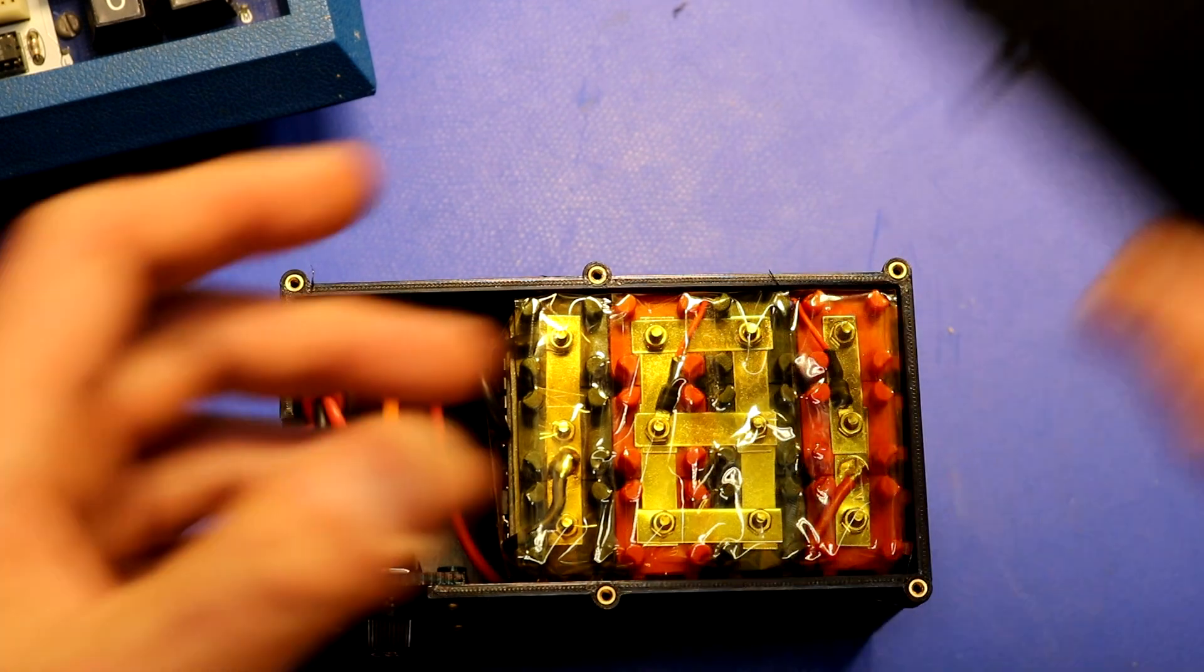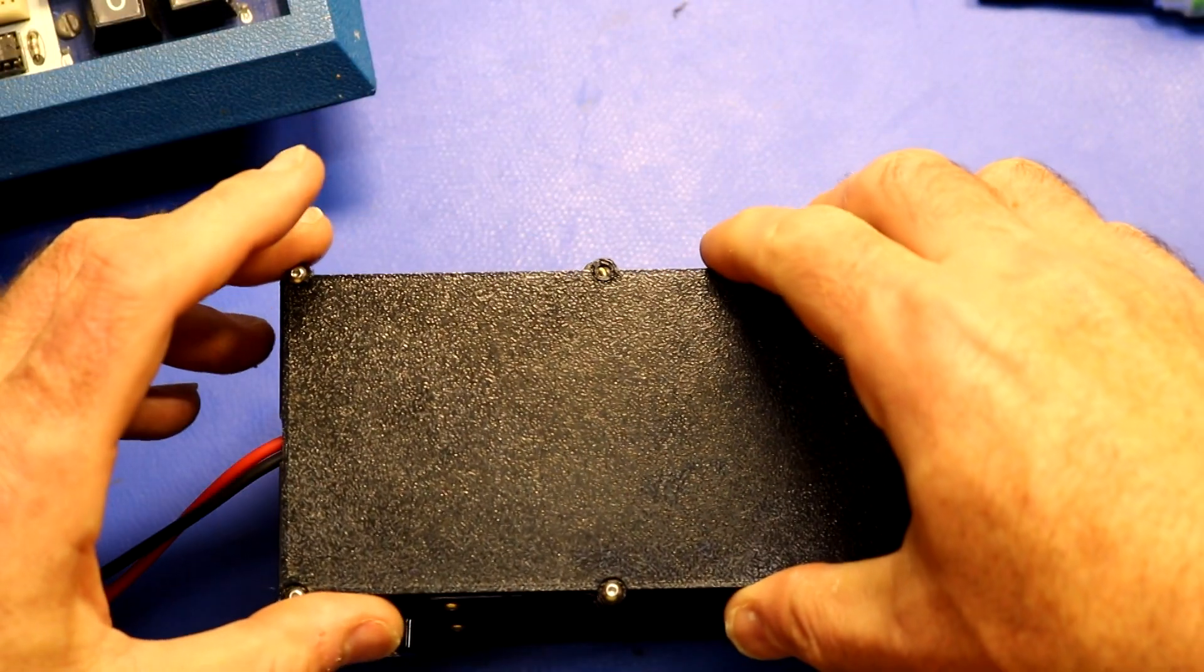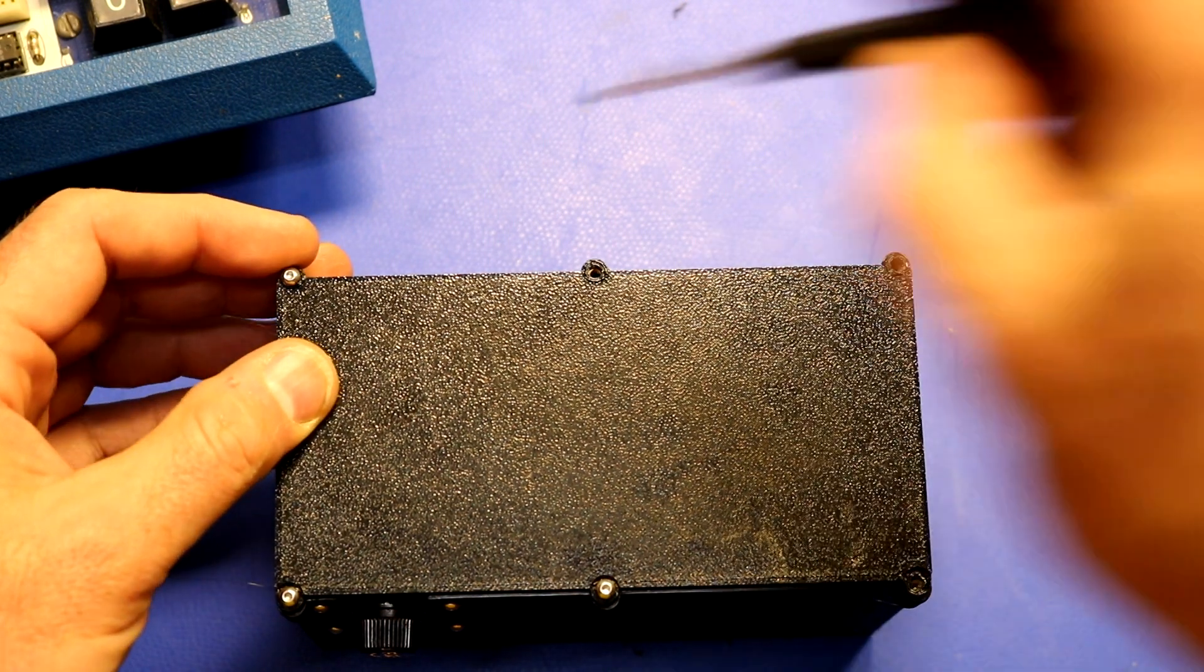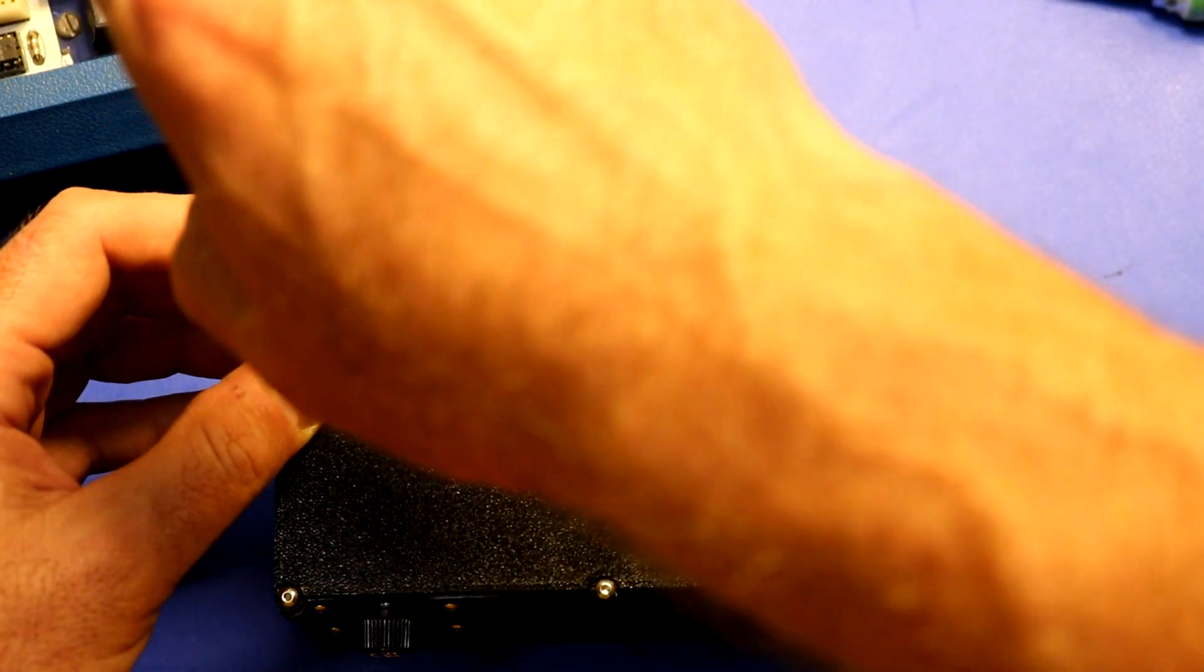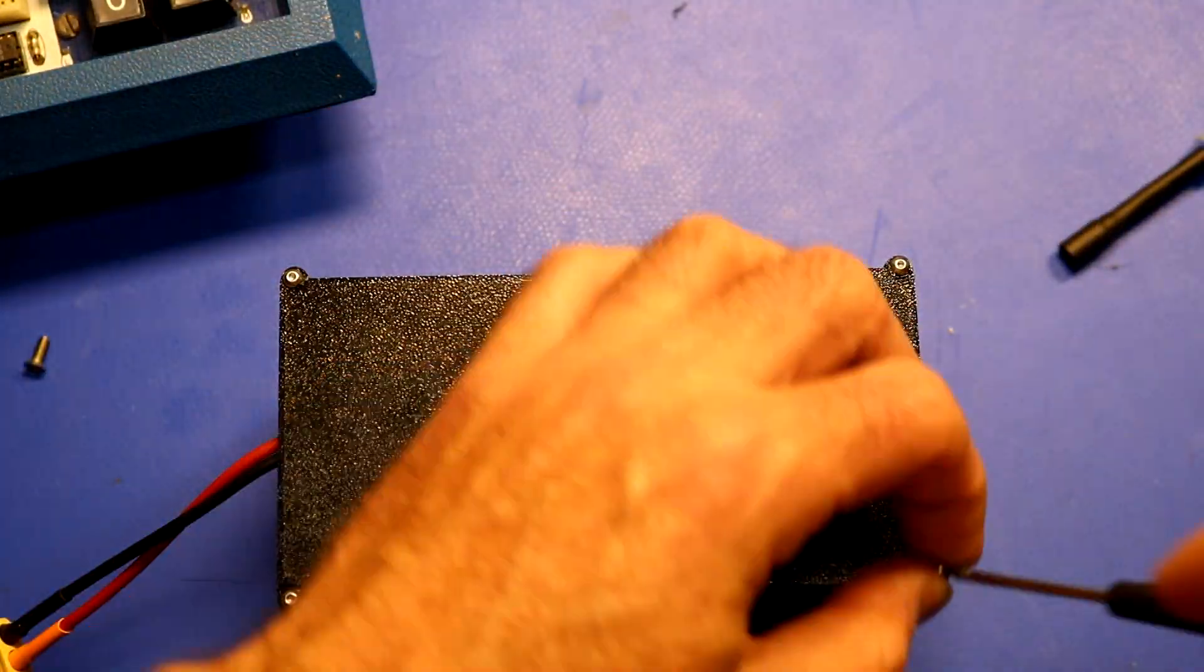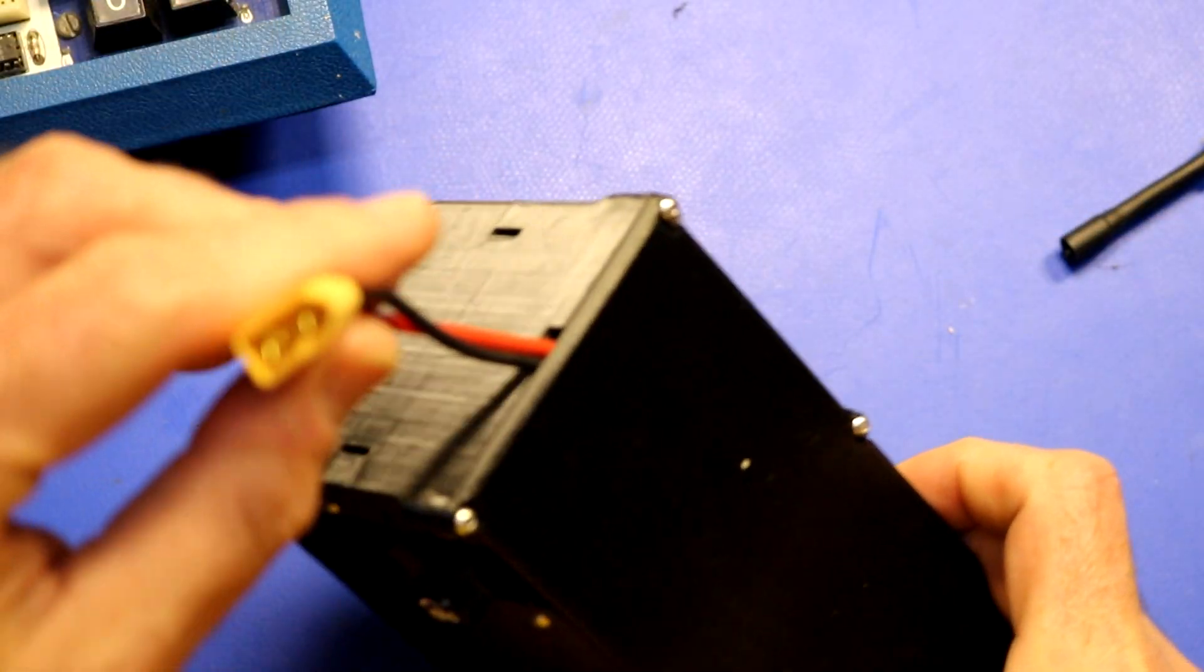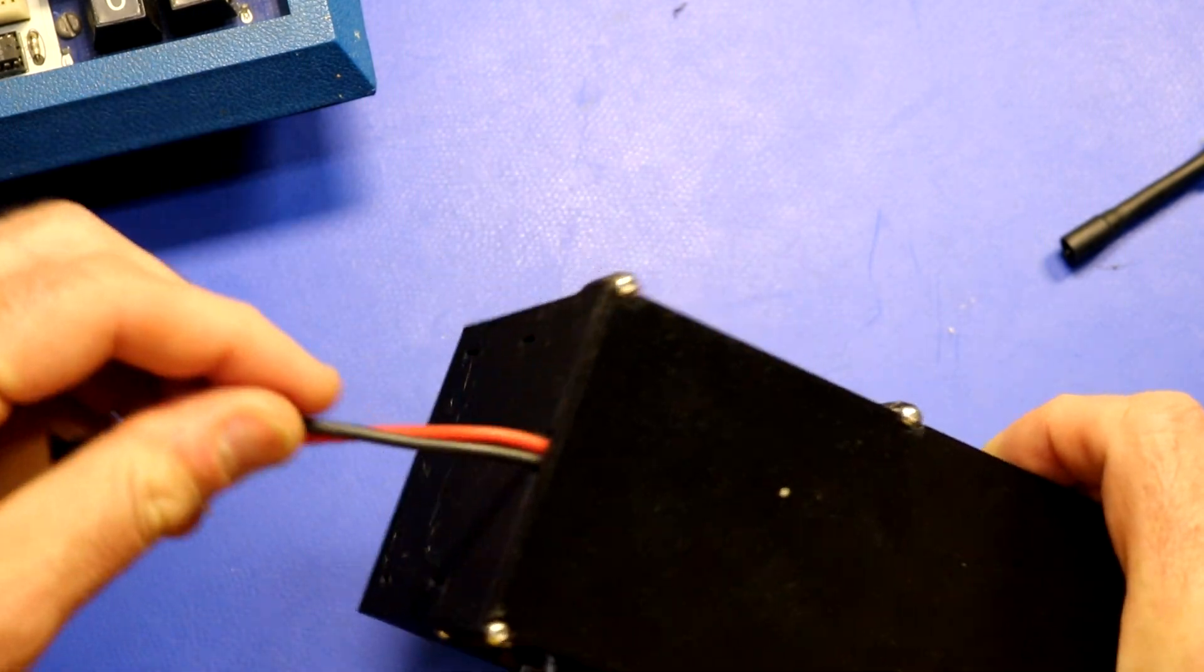And then I have a 3D printed lid that goes on top like so. And then our battery will be safe and secured inside of this plastic case. There we go! Nice and sturdy and ready for use.